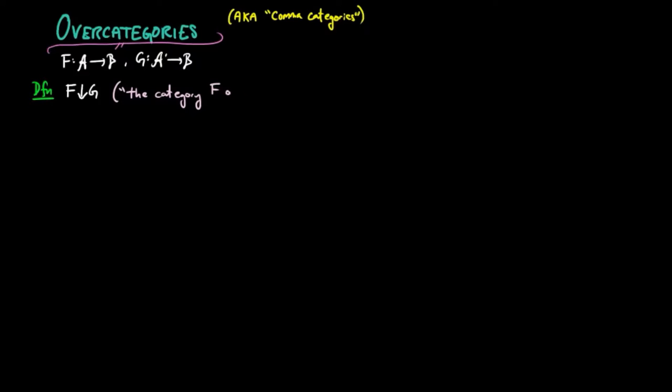We define the category f over g to have objects as b-morphisms, of which have domain in the image of f and codomain in the image of g, and we write such an object by a triple x, f, x prime, where x is an a object, x prime is an a prime object, and f is a b-morphism from fx to gx prime.